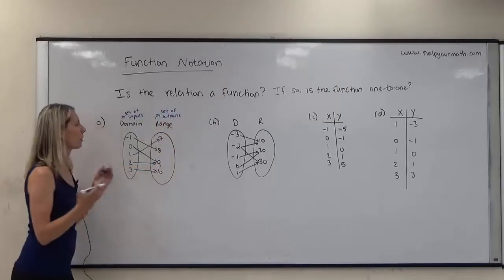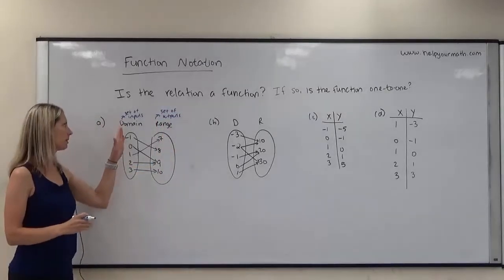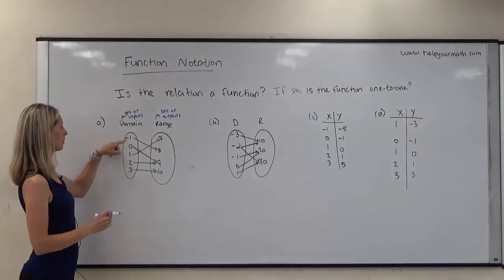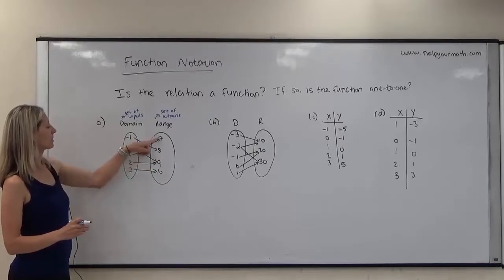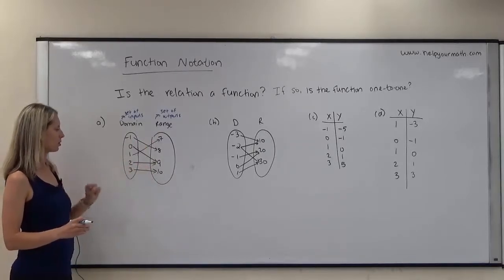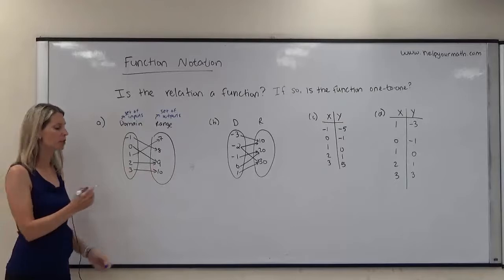So we want to see, for a relation to be a function, that means that every input maps to exactly one output. So negative one maps to just one number. Zero maps to just one number. One maps to just one number. Two maps to just one number. And three maps to just one number. So yes, this is a function.